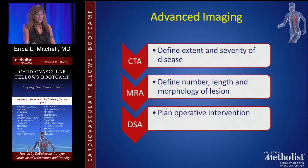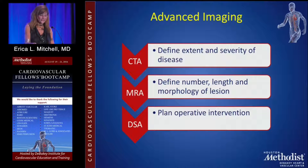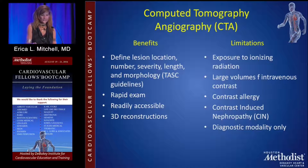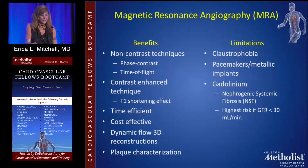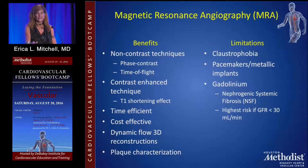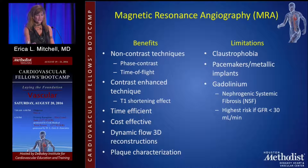Advanced imaging is performed for patients planned for intervention. CTA provides detailed anatomic information but requires ionizing radiation, IV contrast, carries allergy risk, and the complication of contrast-induced nephropathy. MRA has two modalities: non-contrast (phase contrast and time-of-flight) and contrast-enhanced (T1-shortening effect). Recent studies show MRA is more accurate than CTA, though CTA is often preferred as it is cheaper, quicker, and avoids claustrophobia issues. Patients with pacemakers are not suitable MRA candidates.